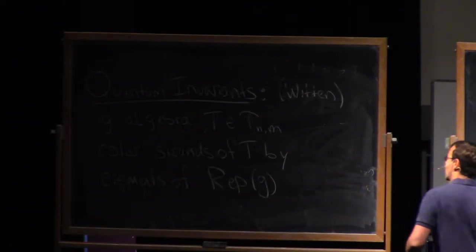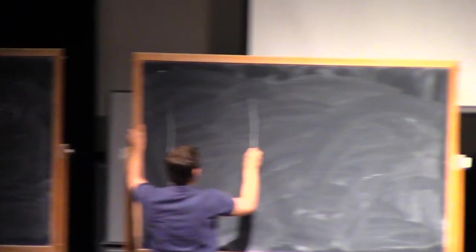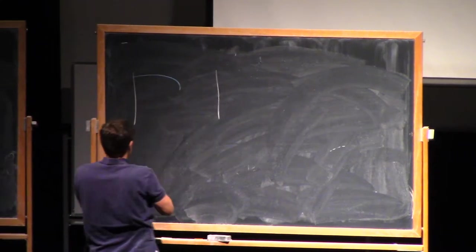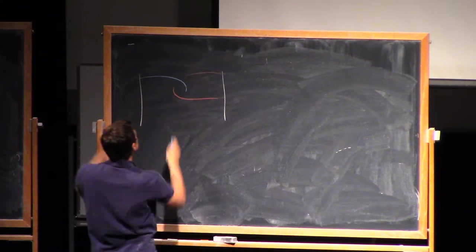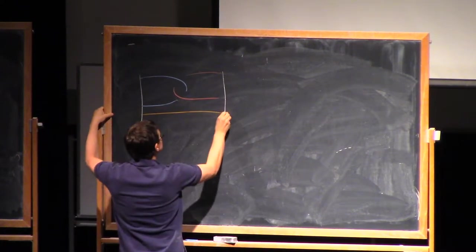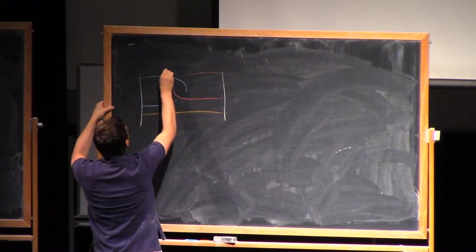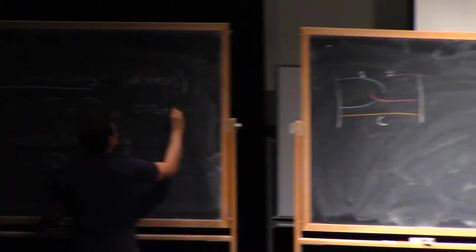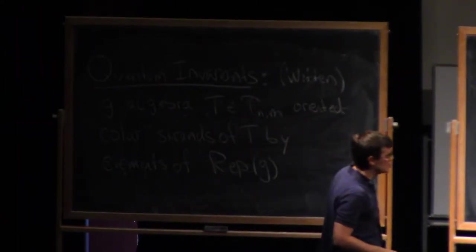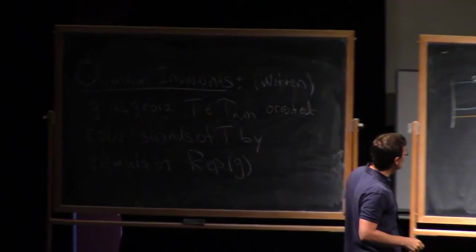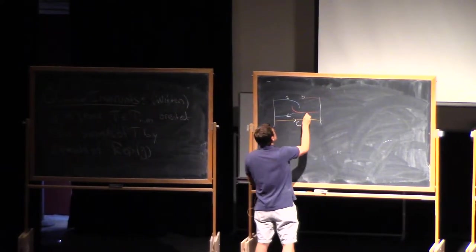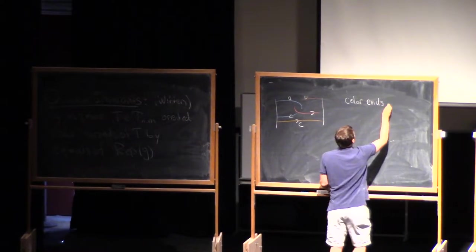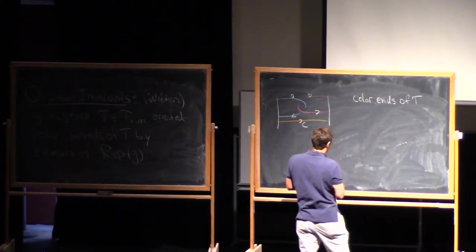Okay, so maybe just to draw a picture. Here's a tangle where I have three colors, say A, B, and C, and now I see I've forgotten something very important, so I want this to be an oriented tangle.